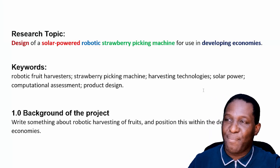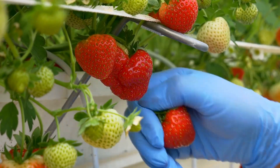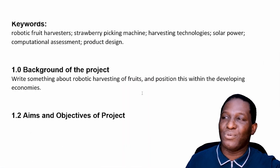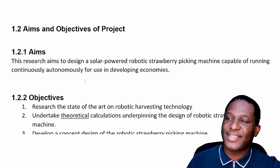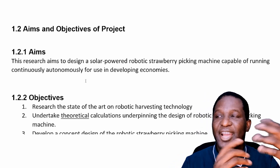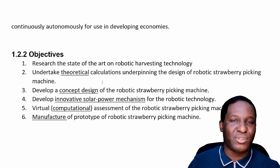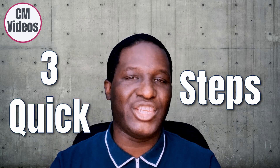We are going to work with Dr. Brian, who wants to write a research methodology for a project titled 'Design of a Solar-Powered Robotic Strawberry Picking Machine for Use in Developing Countries.' He has some keywords, background, aims, and objectives — the research aims to design a solar-powered robotic strawberry picking machine capable of running continuously and autonomously. He's now wondering how to create a methodology for this.